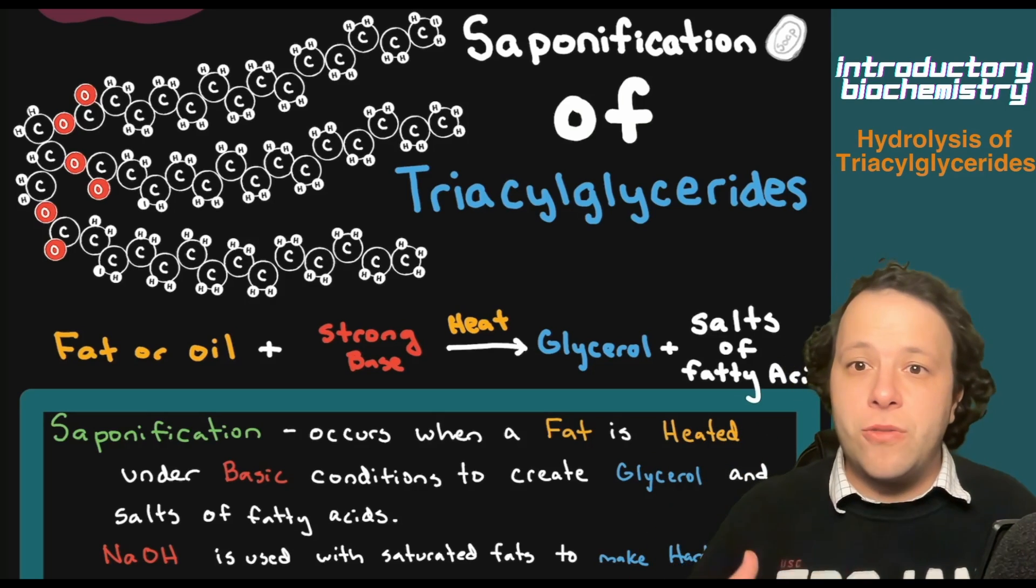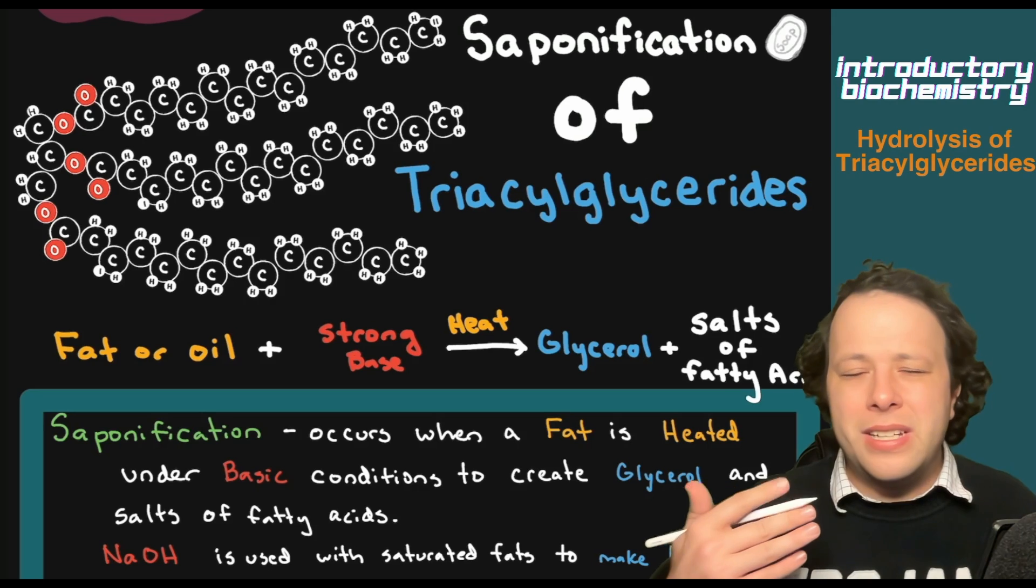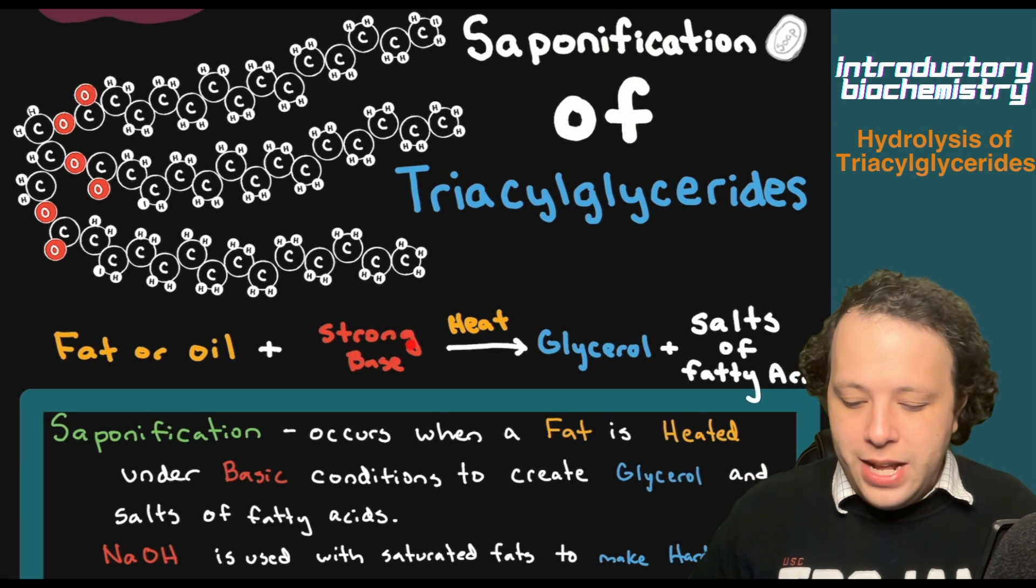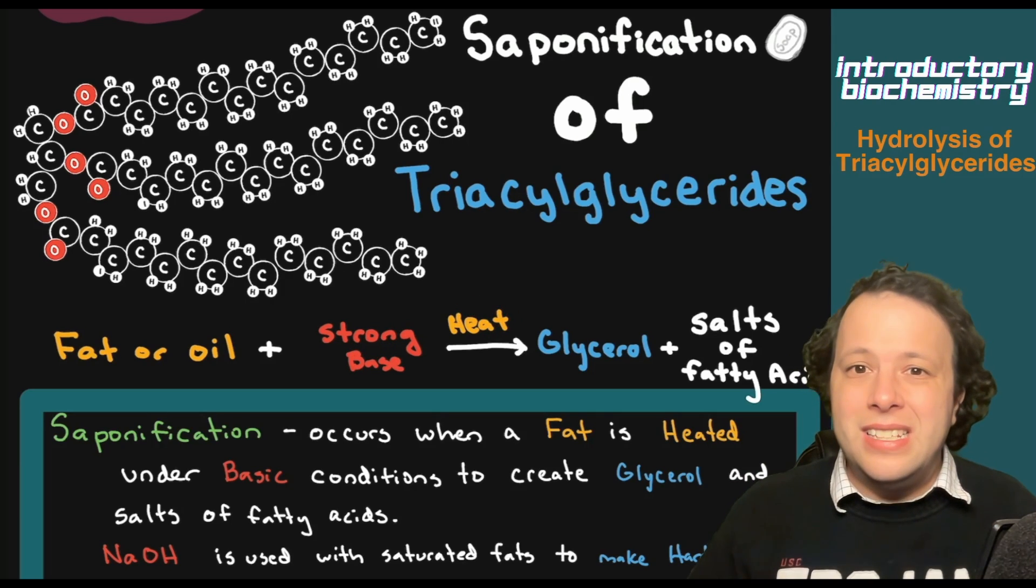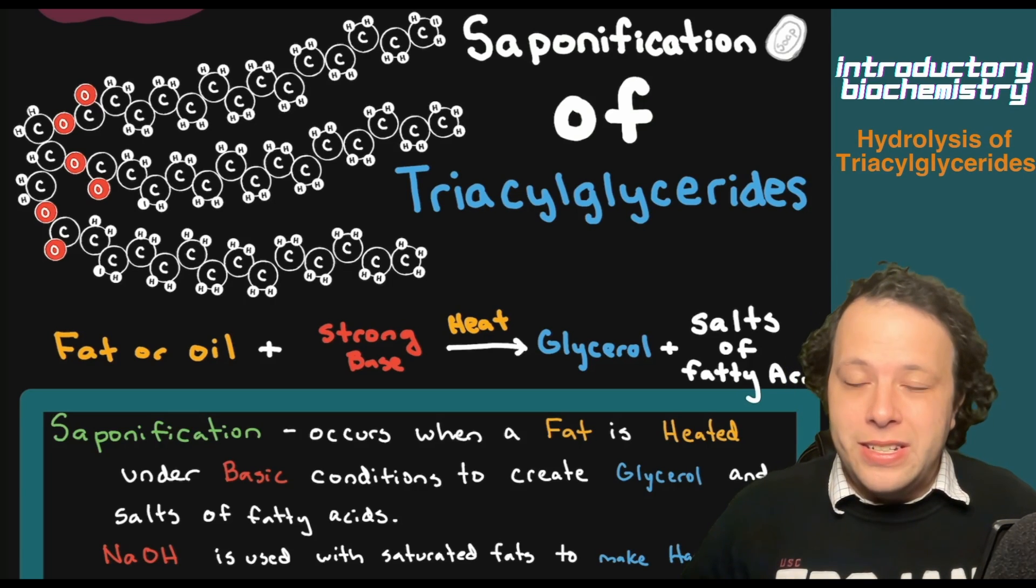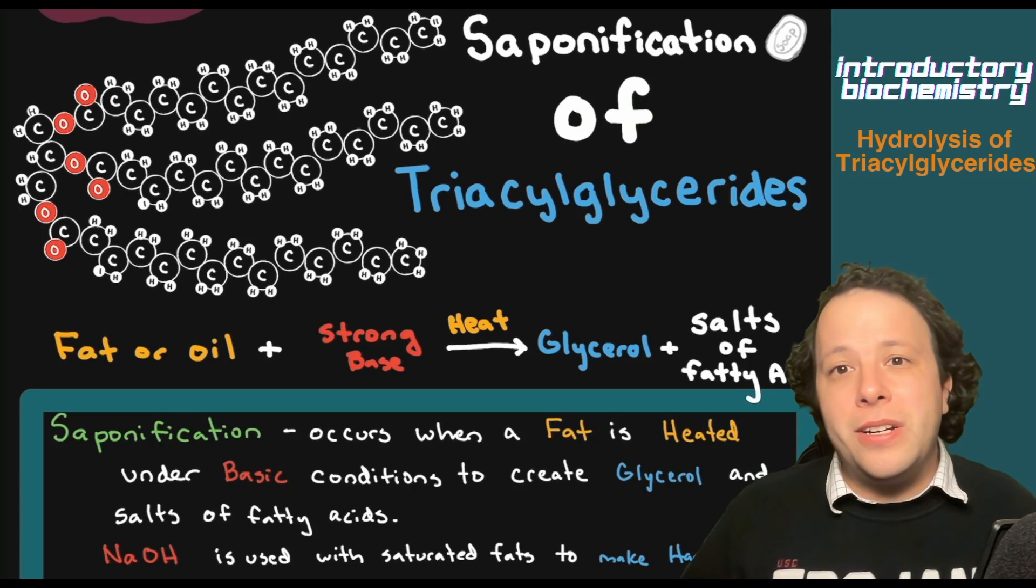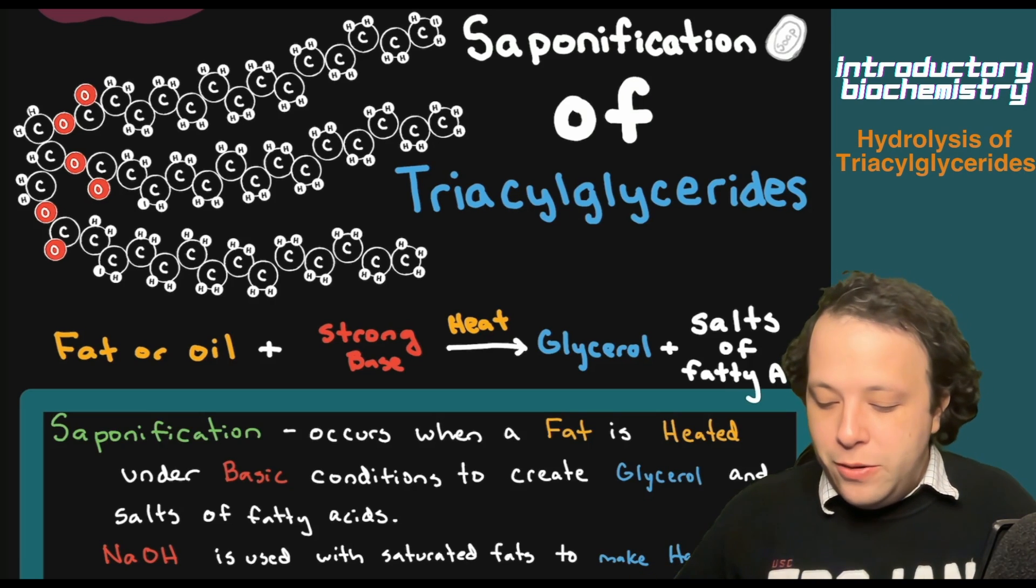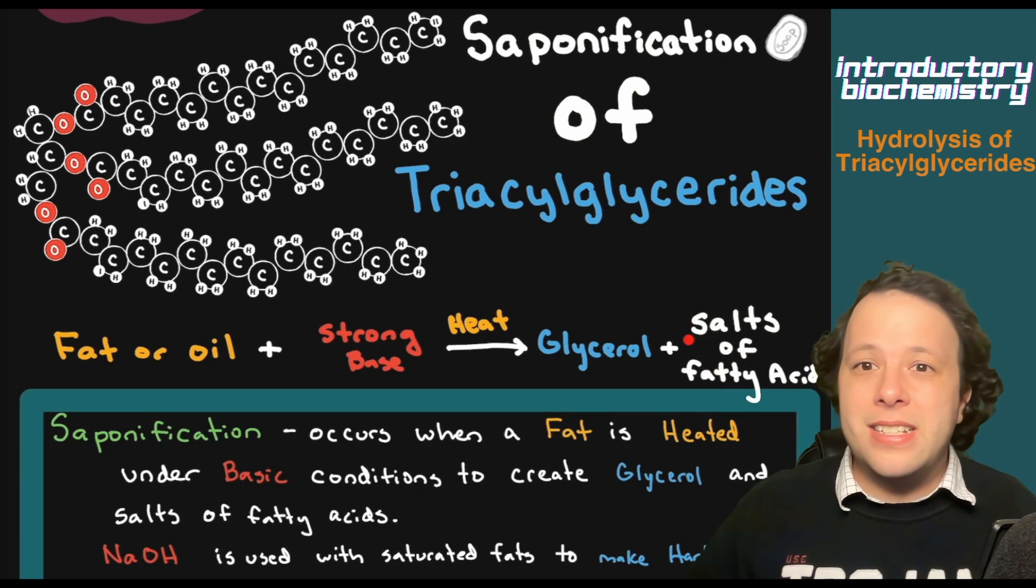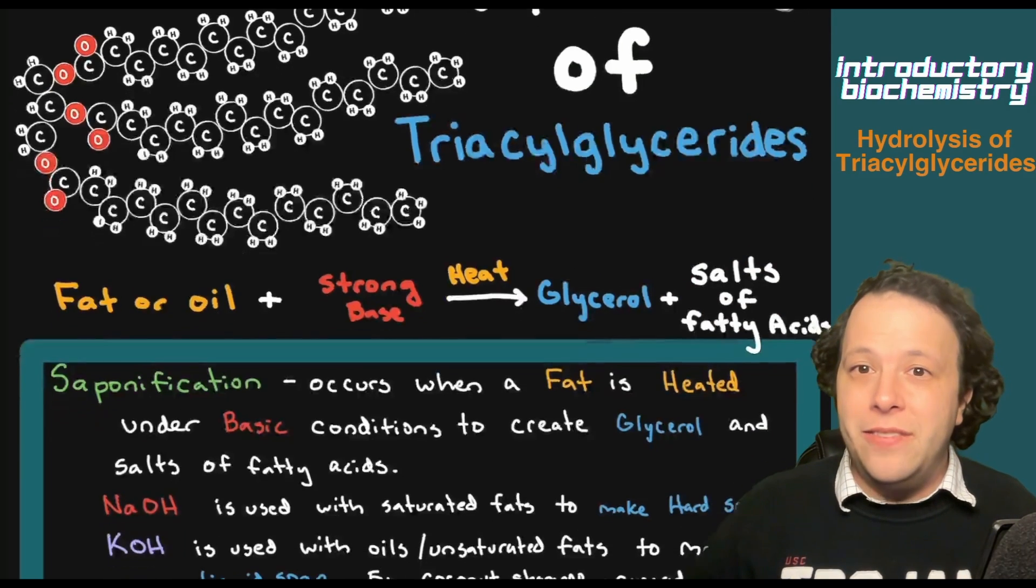If you add a strong base like lye, sodium hydroxide, or potassium hydroxide under intense heating conditions, you can break it apart. Your body breaks it apart through acidic conditions, but here we do it through basic conditions. When that happens, you're going to make glycerol, and the fatty acid becomes a salt of the fatty acid.